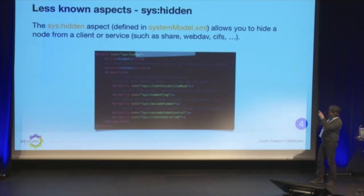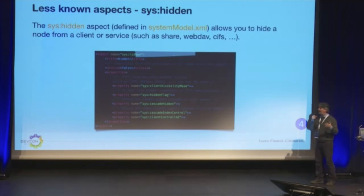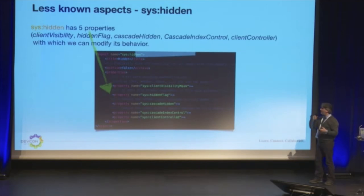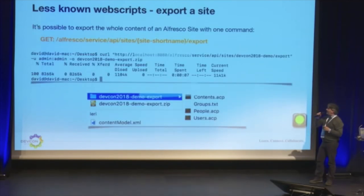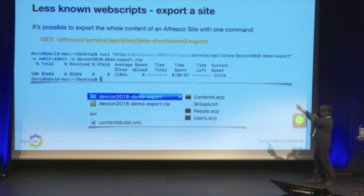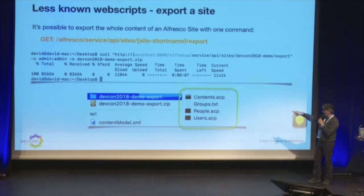You probably didn't know that: the hidden aspect allows you to hide a node from a service or client — Share, WebDAV, CIFS, and many others. This aspect has five properties, with client visibility as the flag with which you can modify its behavior. Finally, you probably didn't know that it's possible to export the whole content of an Alfresco site with one command — one web script, the export web script. You can also use curl. Note that this command exports the content, the people, users and groups, all together in one zip.